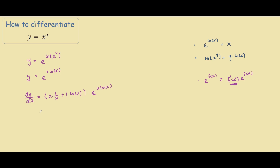Simplifying this down, we have the two x's cancel out, so we're left with 1 plus ln of x times e to the x ln of x.